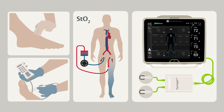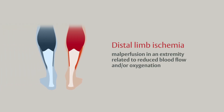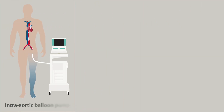We'll conclude with a case example demonstrating the benefits of STO2 monitoring. Distal limb ischemia can be defined as malperfusion in an extremity related to reduced blood flow and or oxygenation. Ischemia can occur in multiple settings,